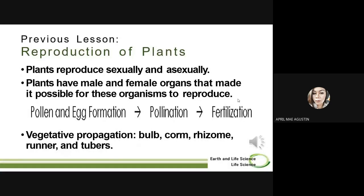Our previous lesson is all about the reproduction of plants. We discussed that plants reproduce sexually and asexually. Plants have male and female organs that made it possible for these organisms to reproduce. It also includes pollen and egg formation, followed by pollination and then fertilization. We also discussed vegetative propagation, which includes bulb, corm, rhizome, runners, and tubers.